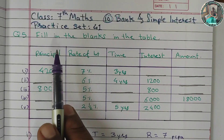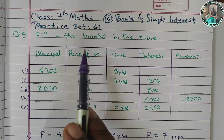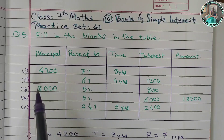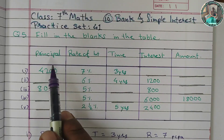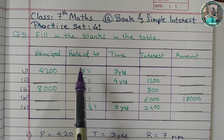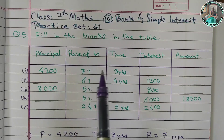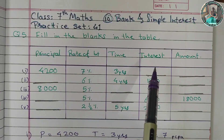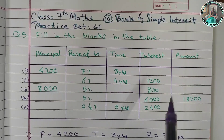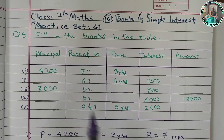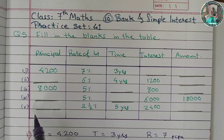What is question 5? Fill in the blanks in the table. The 5 questions are different. Basically, the principal amount, the rate of interest, the time, the interest, and the amount — and in every question, fill in the blanks.